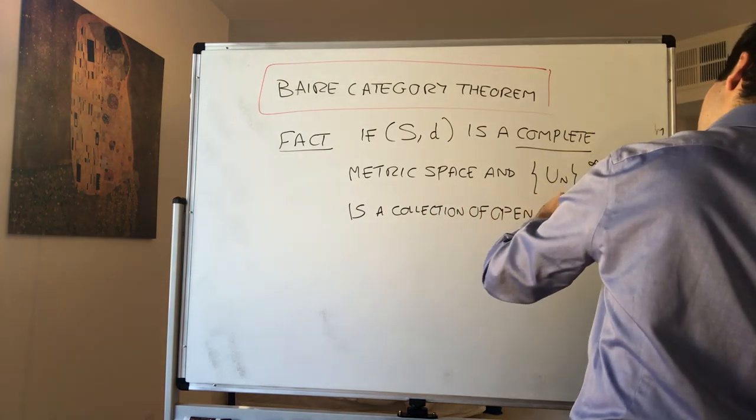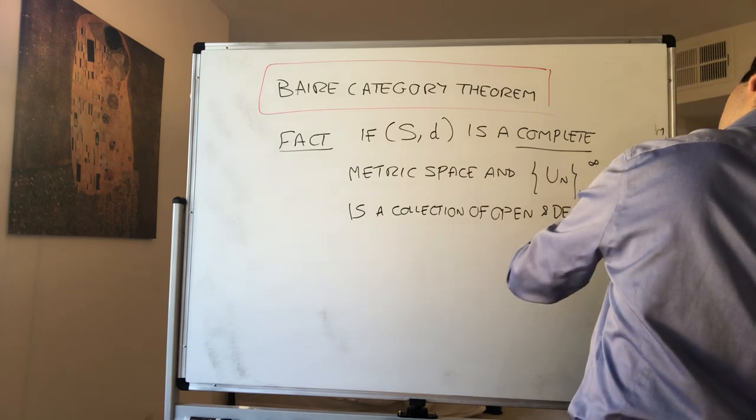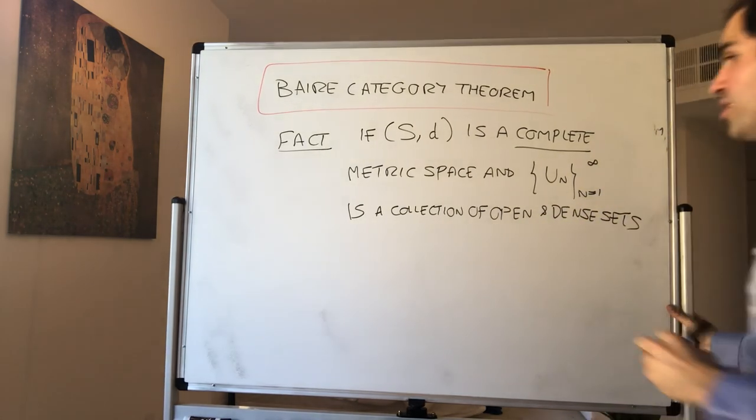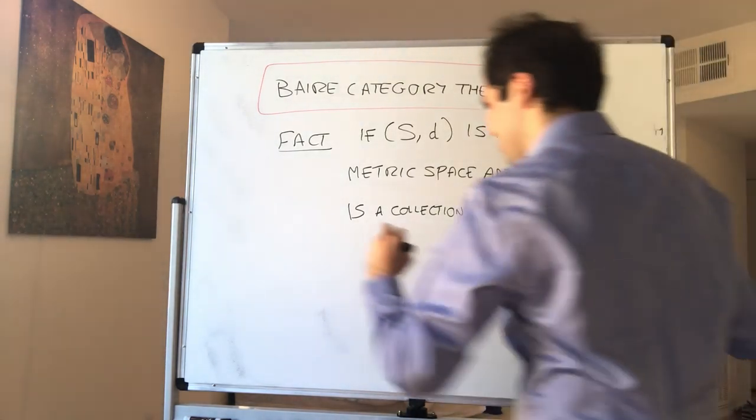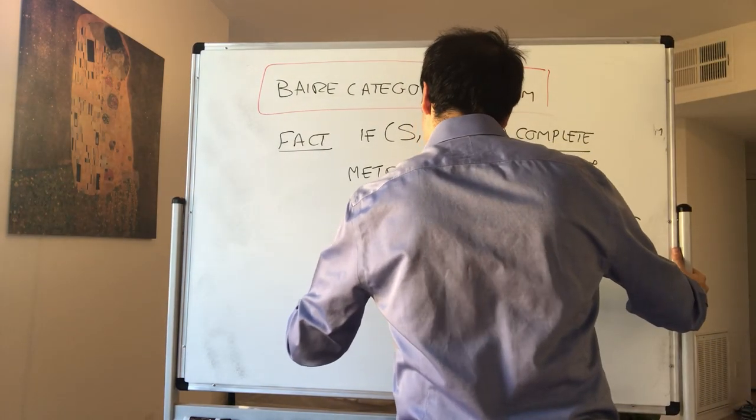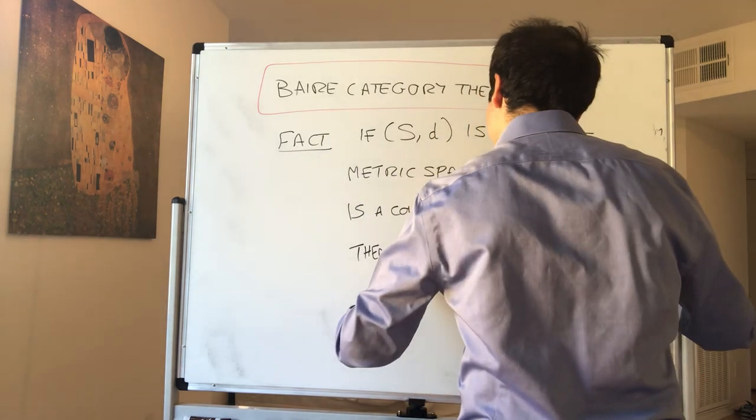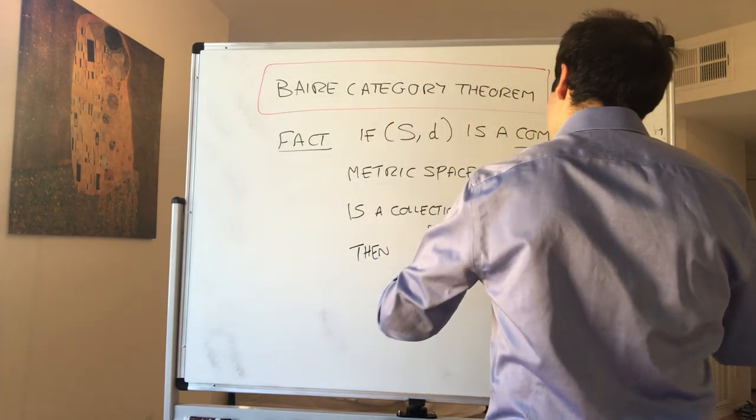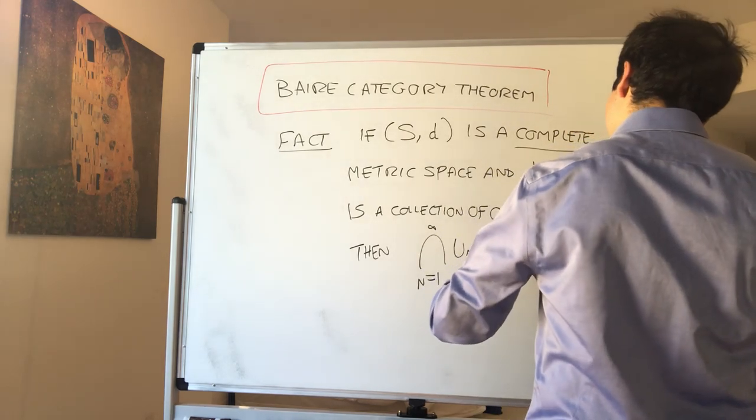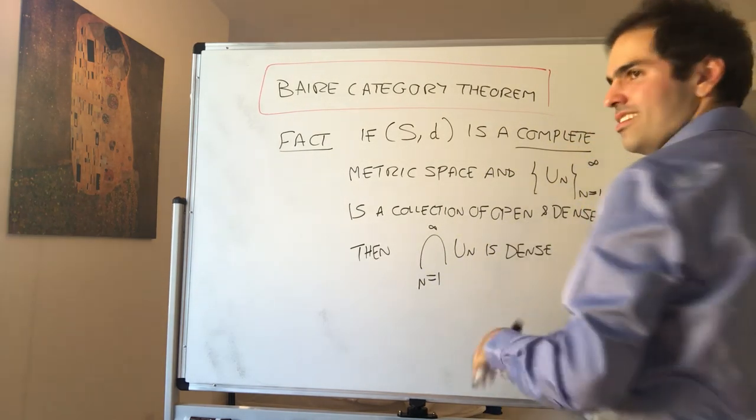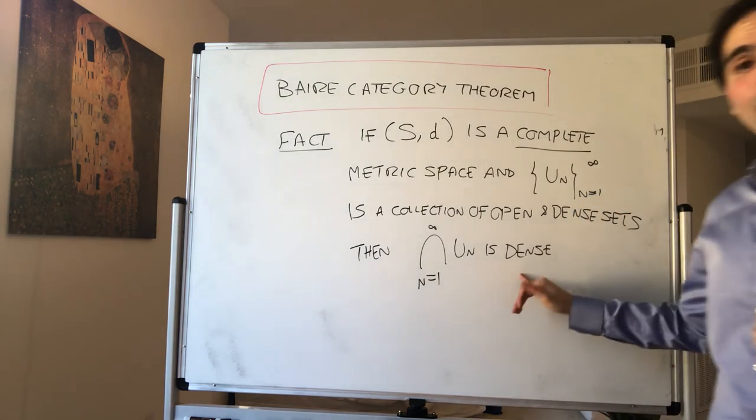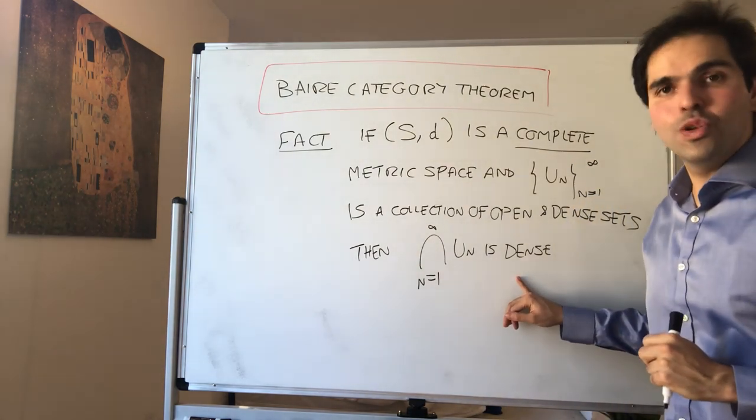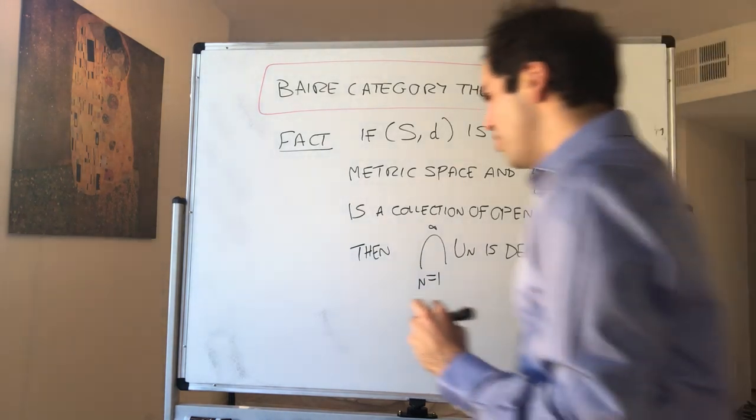Then the intersection might not be open, but it's definitely dense. The intersection from n equals 1 to infinity of un is dense. And the reason I'm covering this is because the proof is super super neat, so let me go through the proof.